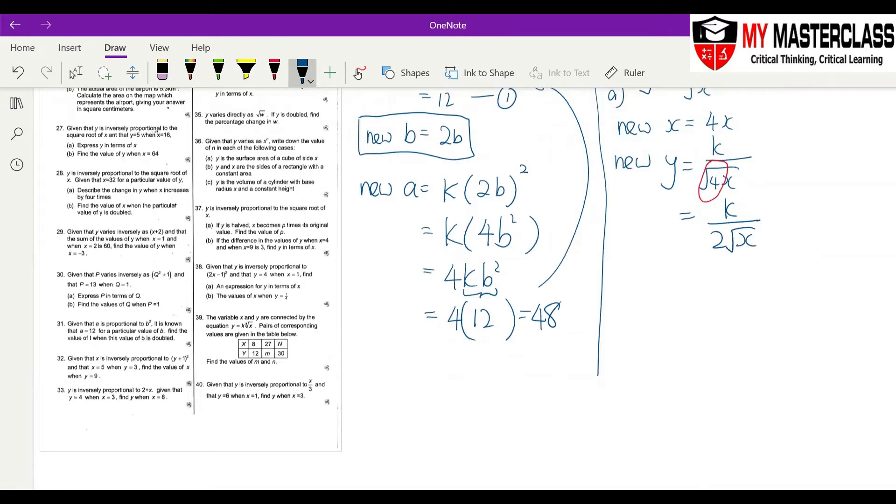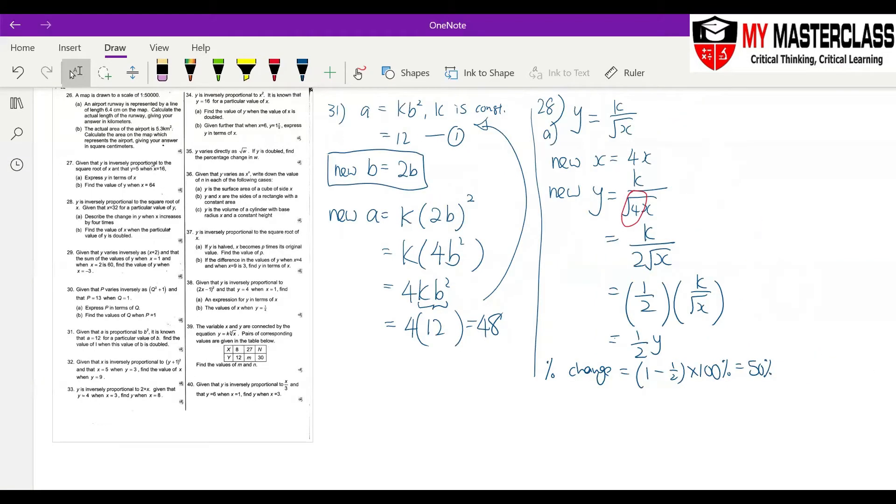Then you must use your double bracket form. K over square root x is here, so this is equal to half of y. So the percentage change is equal to 1 minus half times 100%, equals to 50%.